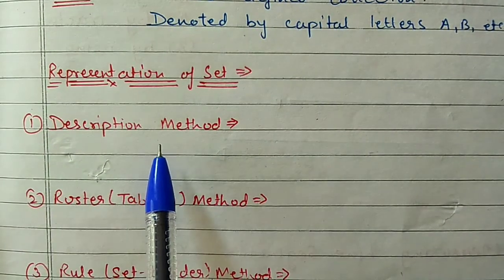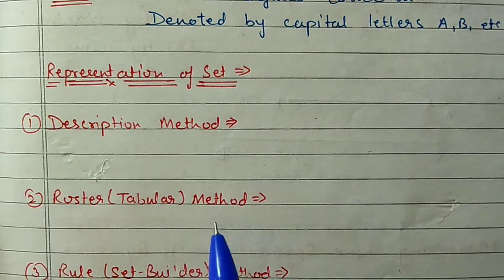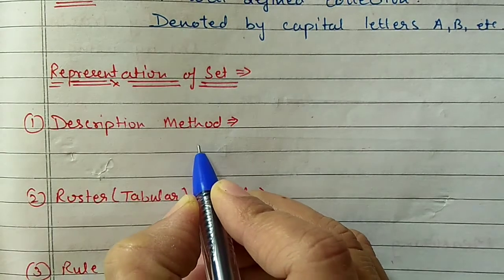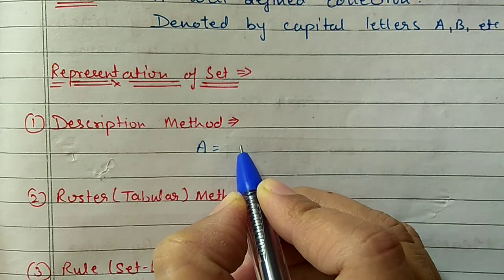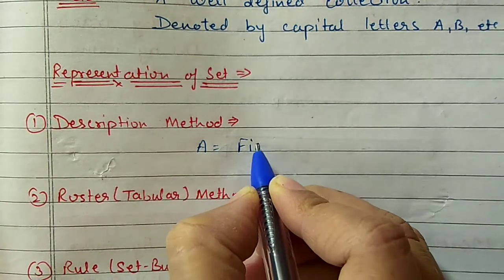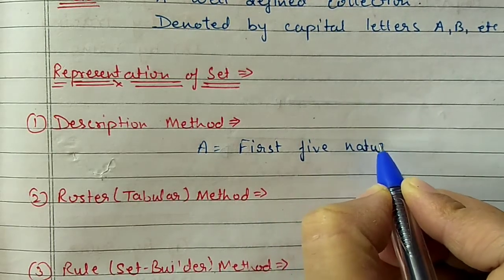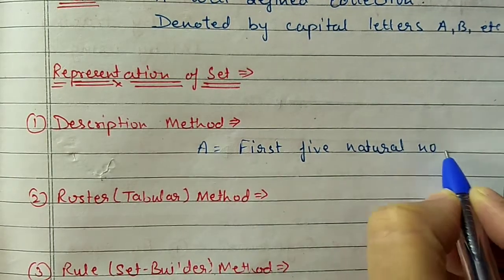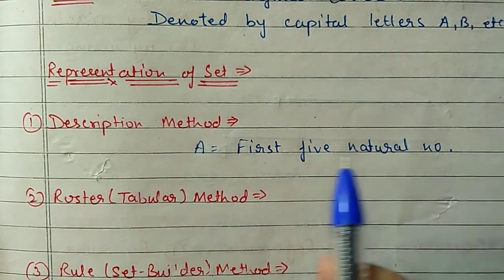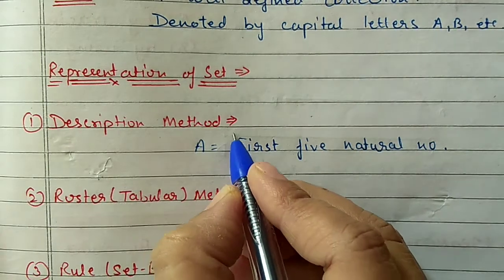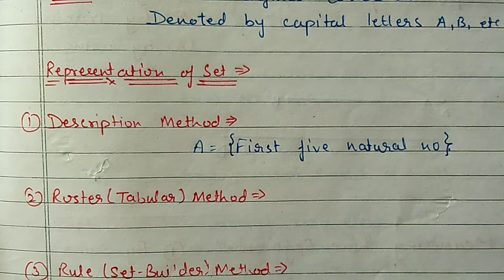The first method is the description method. In this method we have to write the property of the set, or the definition of the set. Suppose I take a set A of the first 5 natural numbers. This is the property of the set. In the description method you can represent it inside flower brackets or without flower brackets - it is not compulsory.